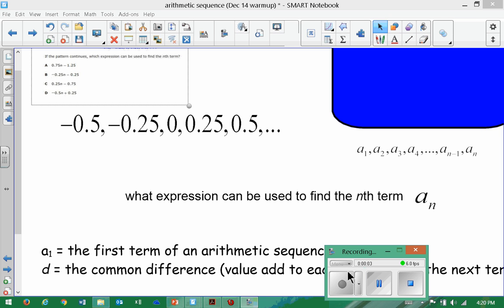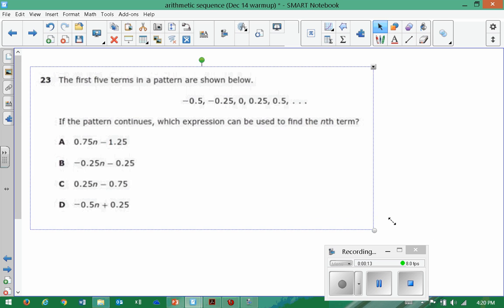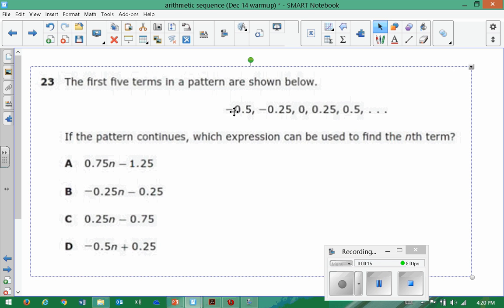Here's a more formal approach to the problem of the pattern in problem number 21. If you remember that problem, or if you're looking at your packet, you'll see that the first five terms in a pattern are shown below. Zero, negative five tenths is the first term. Negative twenty-five hundredths is the second term. Zero is the third term.